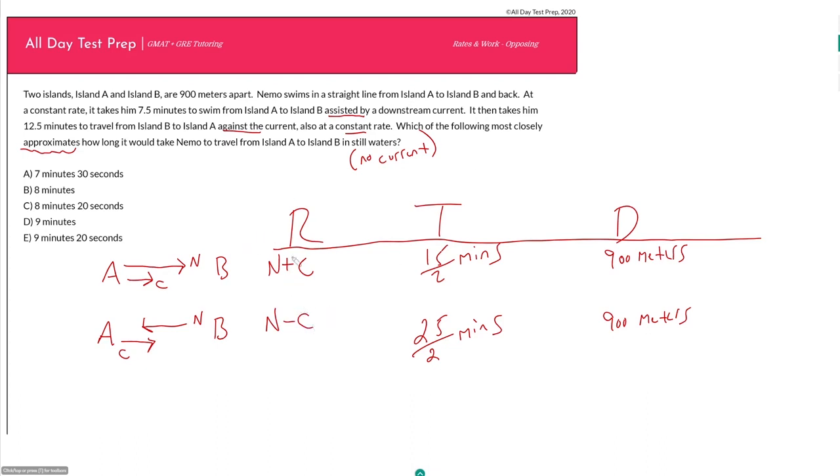If we need Nemo's time by himself, we need Nemo's rate by itself. We have to separate out our rates here into their individual components so we can isolate just N. What I want to do is solve for Nemo's individual rate, then use his individual rate to find his individual time.